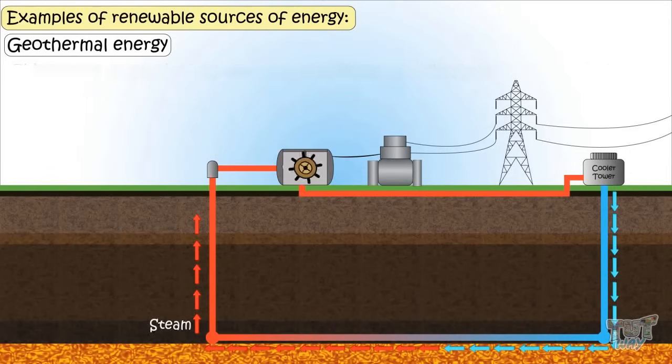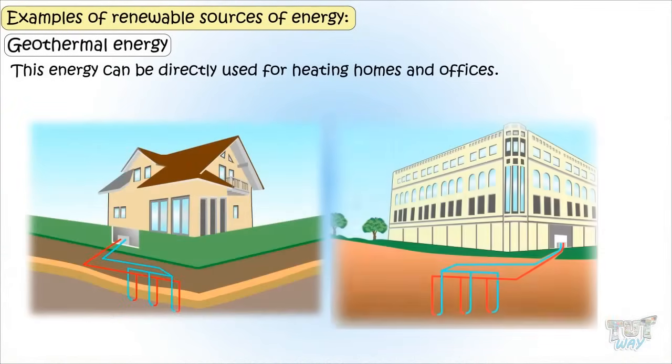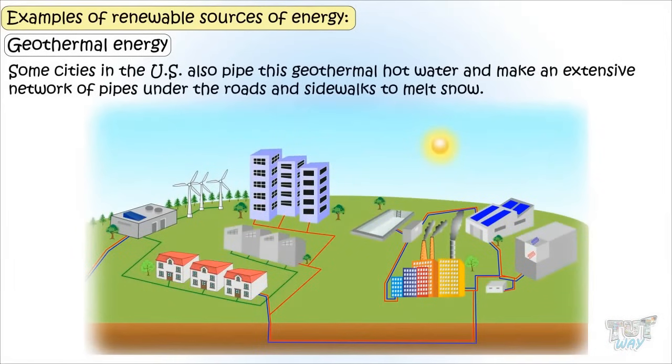This energy can be directly used for heating homes and offices. Some cities in the U.S. also pipe this geothermal hot water and make an extensive network of pipes under the roads and sidewalks to melt snow.